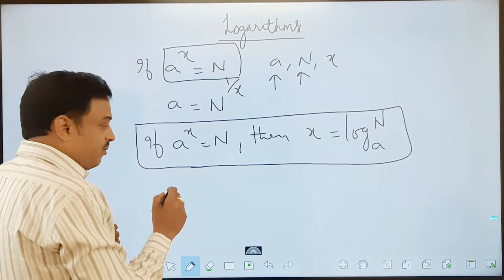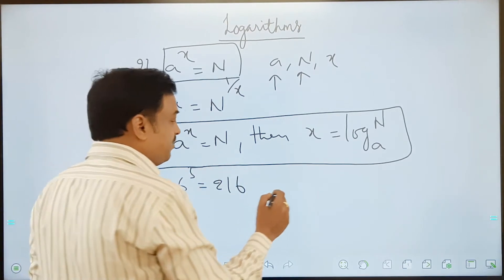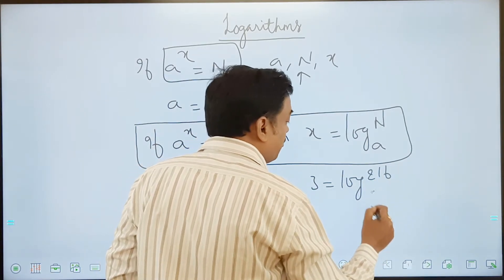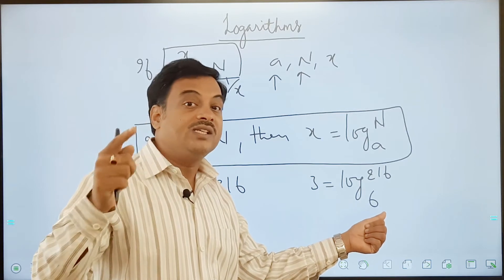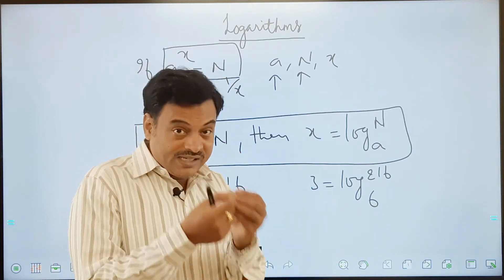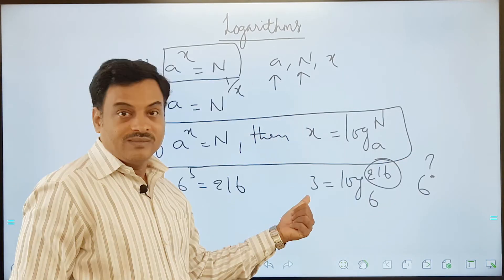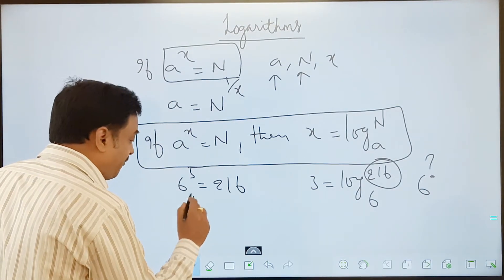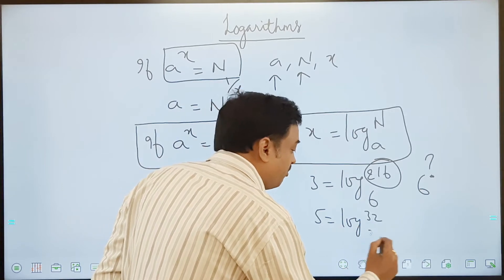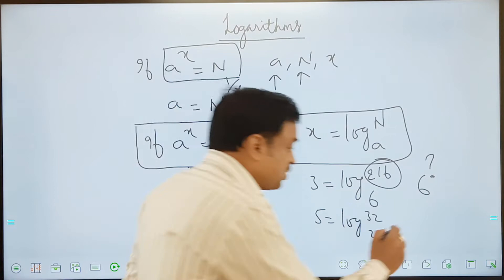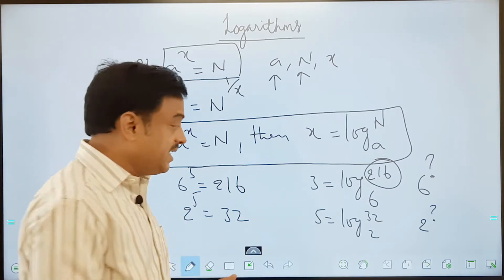Let's have some examples. We all know 6 to the power of 3 is equal to 216. So if I write the same thing in logarithmic form, then 3 is equals to log 216 base 6. With respect to base 6: 6 power 1 is 6, 6 power 2 is 36, 6 power 3 is 216. So when taken 6 as a base, which power of 6 will be 216 — that will be the value. Another one: 2 to the power of 5 is equals to 32. That means 5 is equals to log 32 base 2. Since the base is 2, which power of 2 is 32? Definitely it is 5.